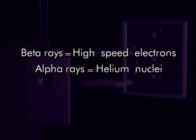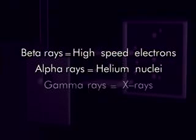Other experiments showed later that the beta rays are actually high-speed electrons. The alpha particles prove to be helium nuclei. The gamma rays are high-energy photons, analogous to X-rays.